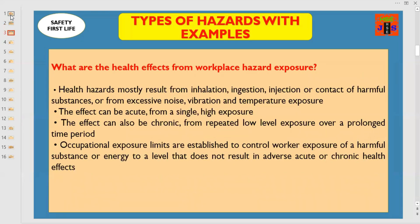Let us understand what are the health effects from workplace hazard exposure. Health hazards mostly result from inhalation, ingestion, or contact with harmful substances, or from excessive noise, vibration, and temperature exposure. The effect can be acute, from a single high exposure. The effect can also be chronic, from repeated low-level exposure over a prolonged time period. Occupational exposure limits are established to control worker exposure to a harmful substance or energy to a level that doesn't result in adverse acute or chronic health effects.